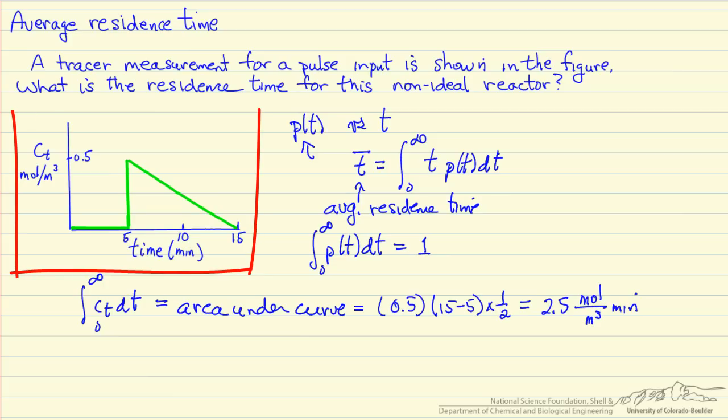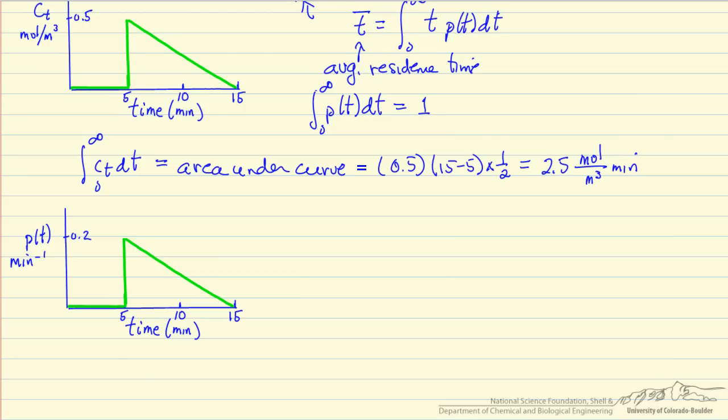If we divide this plot by this area, we would end up with a residence time distribution. So we divide the concentration plot by 2.5, so the maximum is at 0.2. And then we can write an equation for this residence time distribution by first calculating the slope of the line. Slope is negative 0.02.